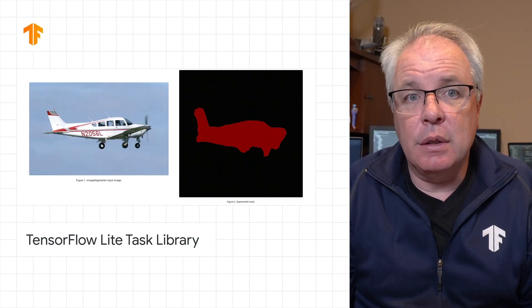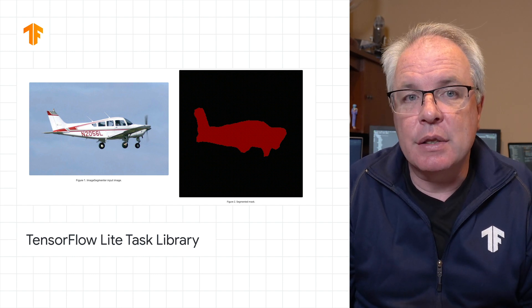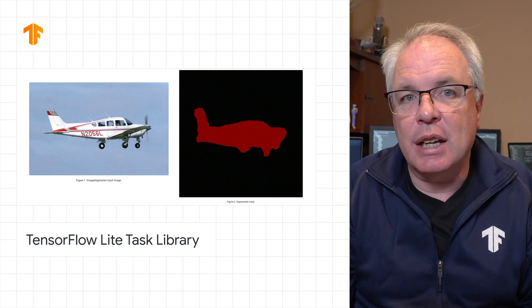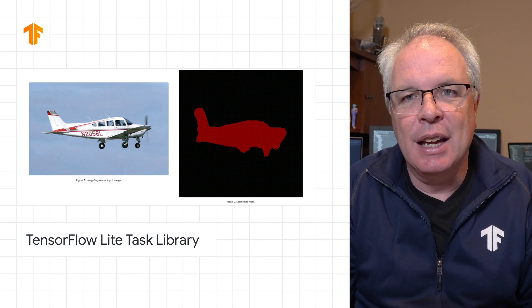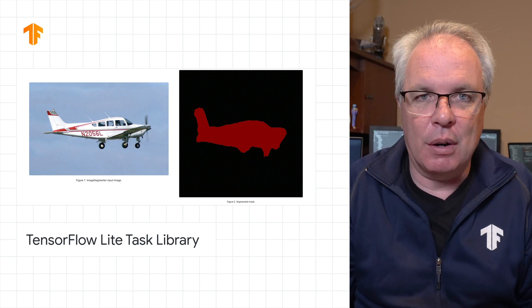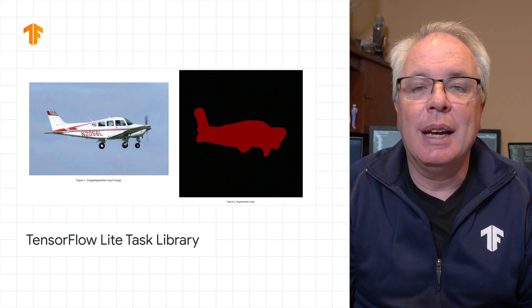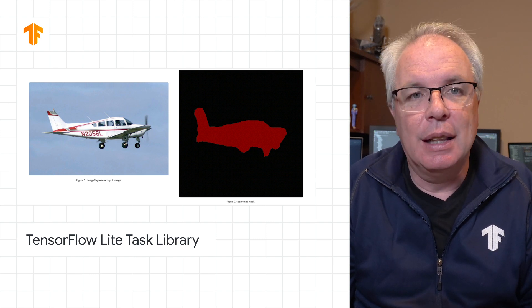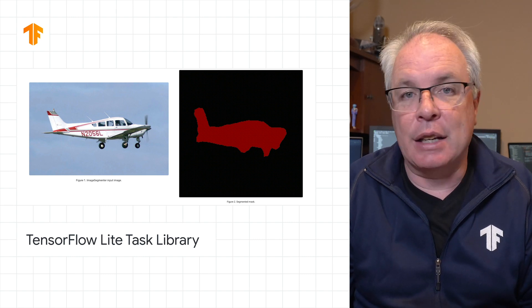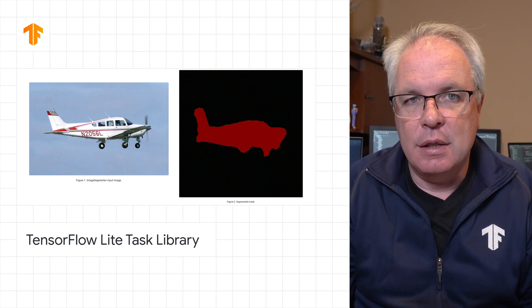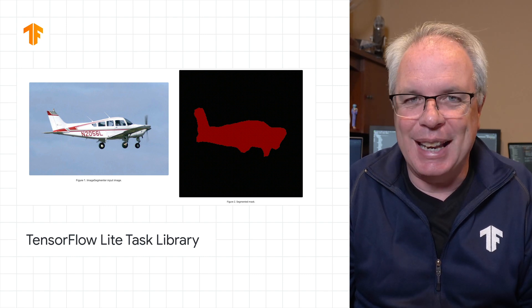Also in TensorFlow is a new TensorFlow Lite task library. If you've tried to build ML on mobile devices, there's often a lot of complex logic to handle things like data conversion, pre and post processing, loading files, and a whole lot more. The task library is a set of model interfaces that handle a lot of this for you in common scenarios like image classification and segmentation, object detection, and natural language processing. In some cases, inference on models can now be done with as few as five lines of code, so go check it out.